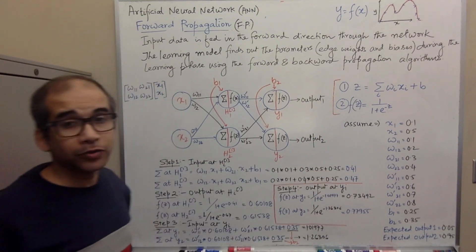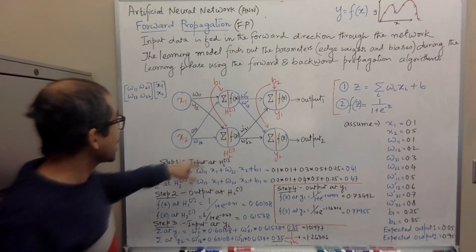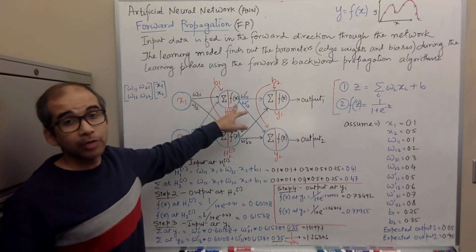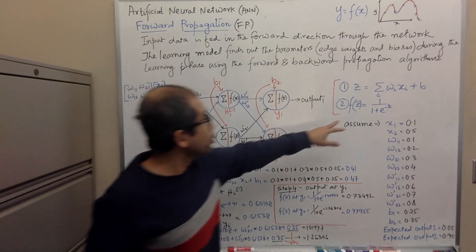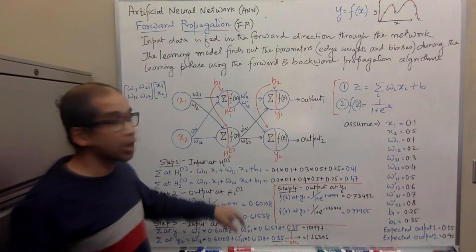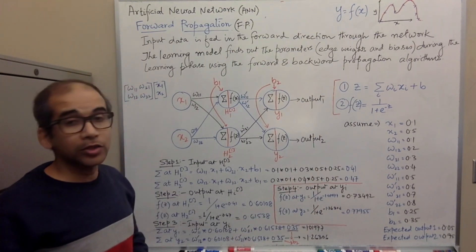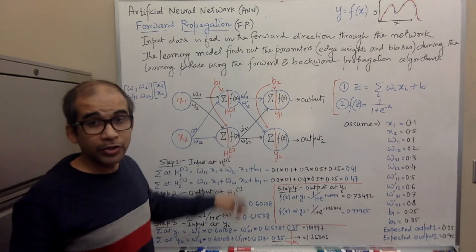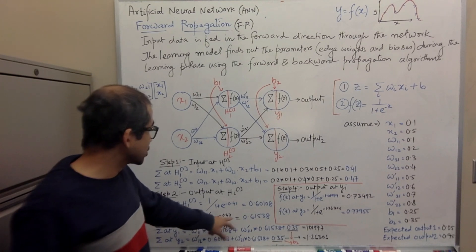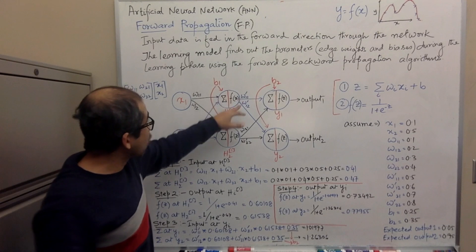Similarly, we calculate w12 times x1 plus w22 times x2 plus the bias, and putting in the corresponding values we get 0.47. Step two: calculate the output of the first hidden layer neurons using the sigmoid activation function. We compute 1 / (1 + e^(-0.41)) and get 0.60108. Similarly, we apply the activation function to 0.47 to get the output of the second neuron of the first hidden layer.